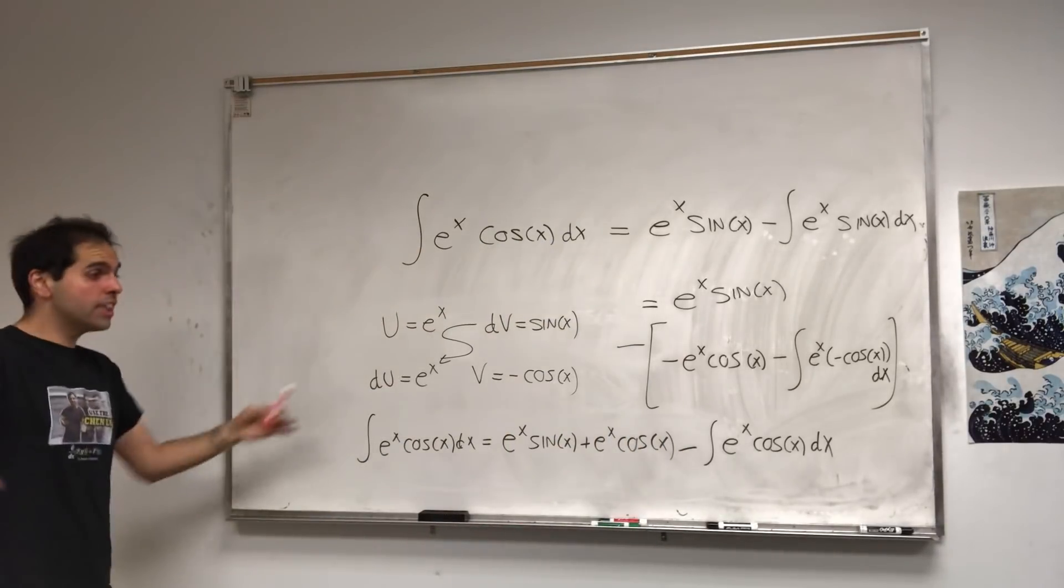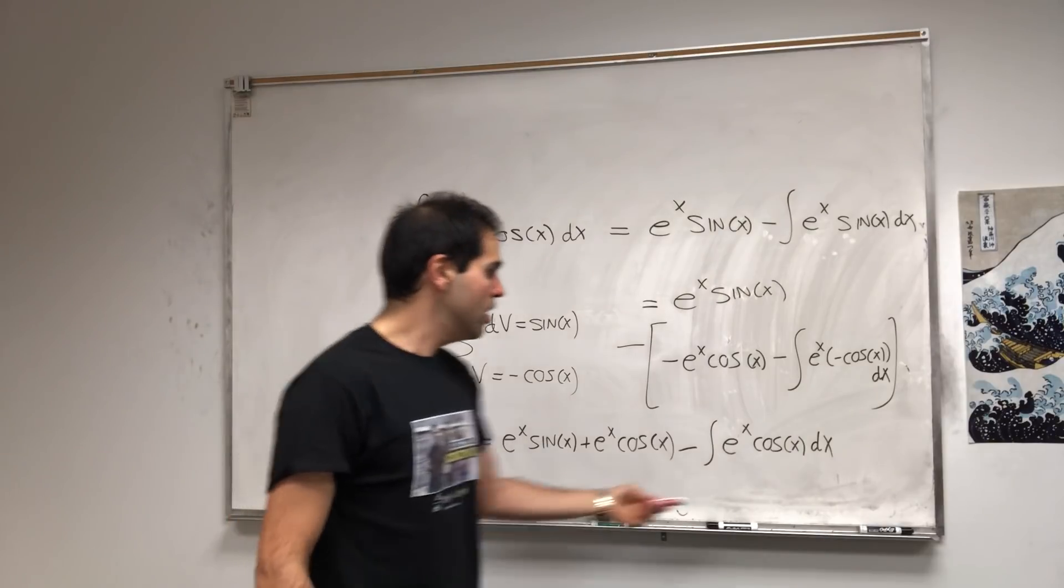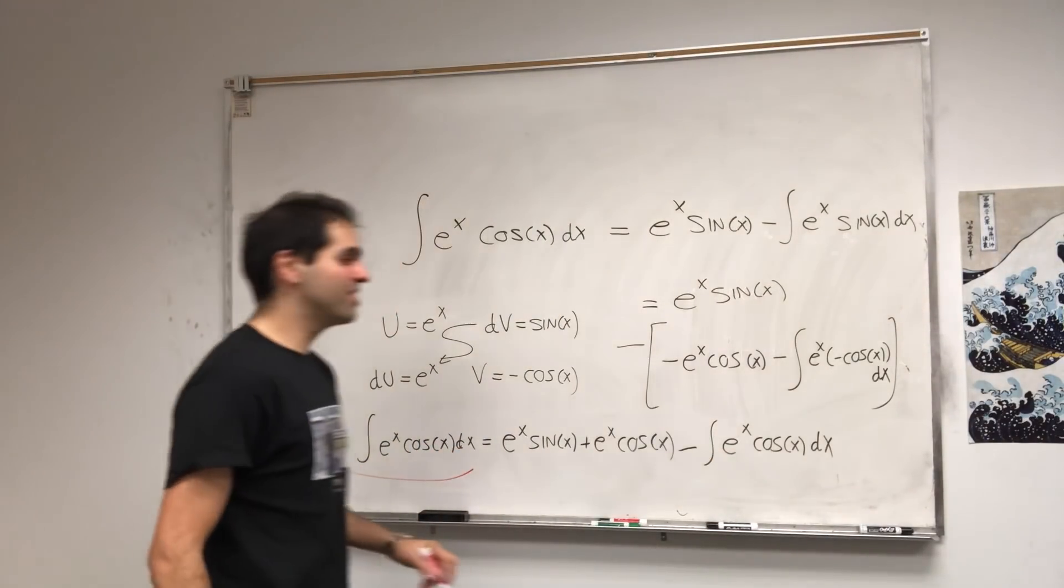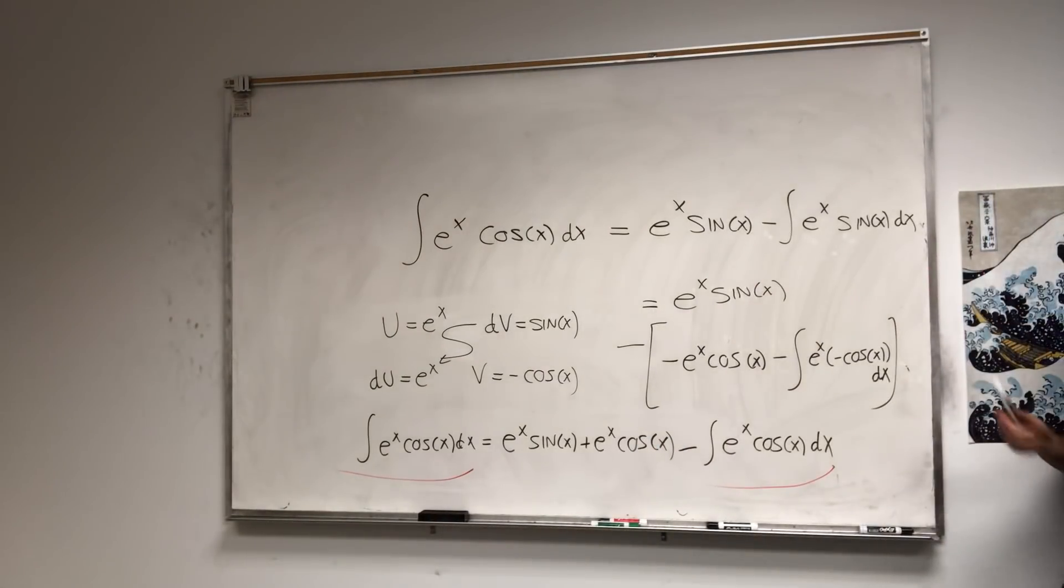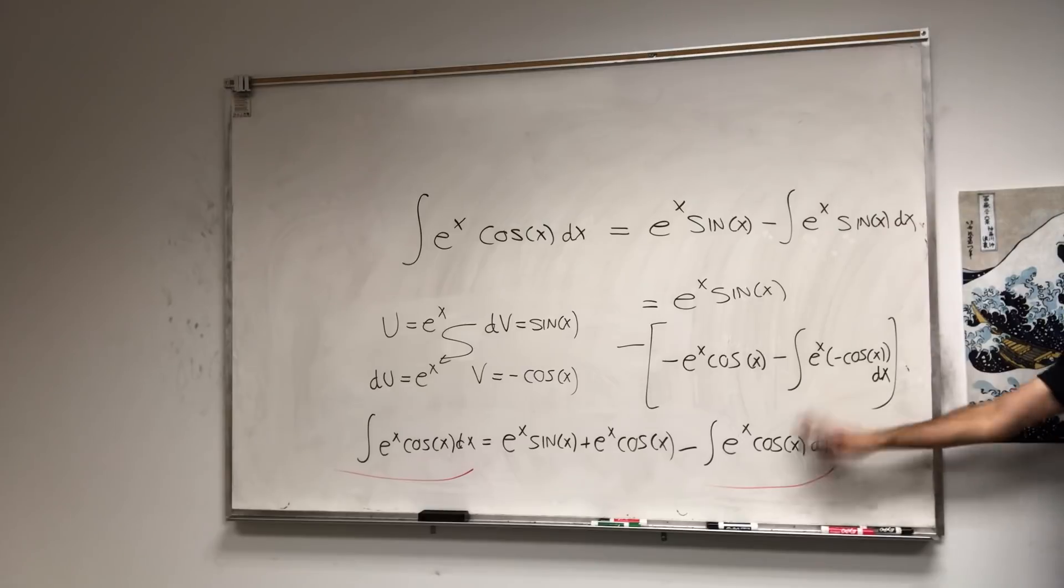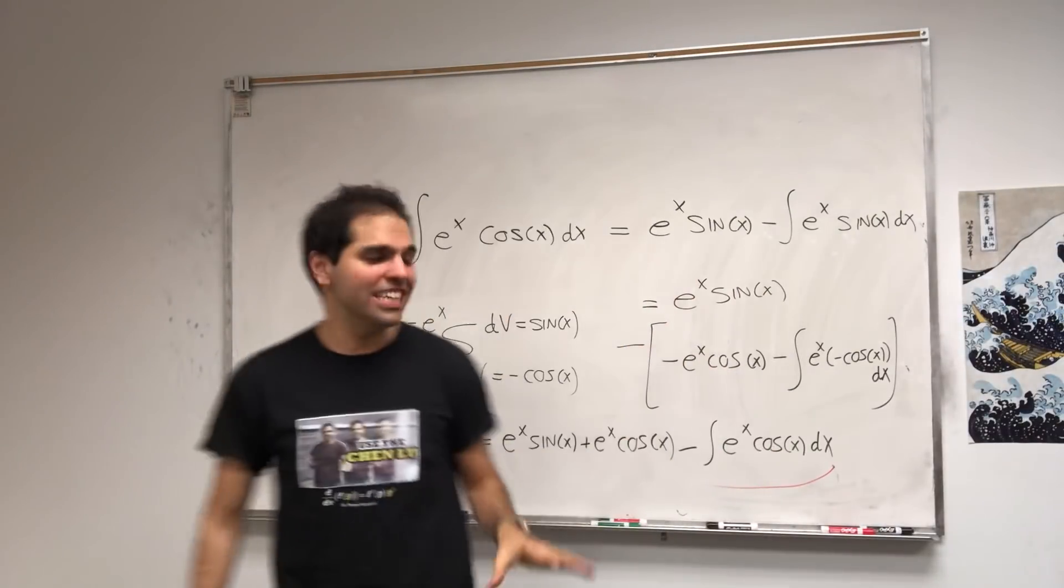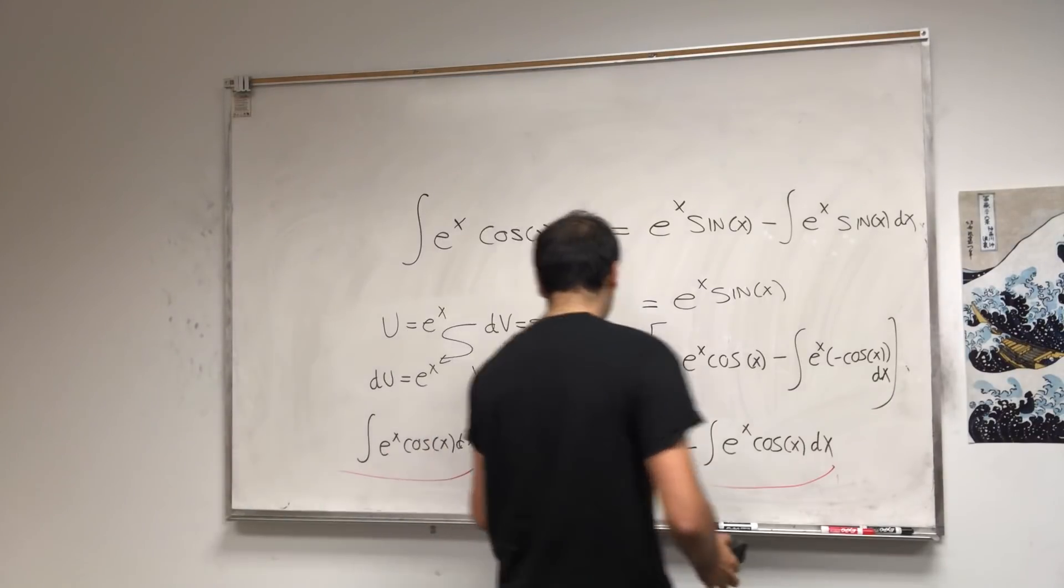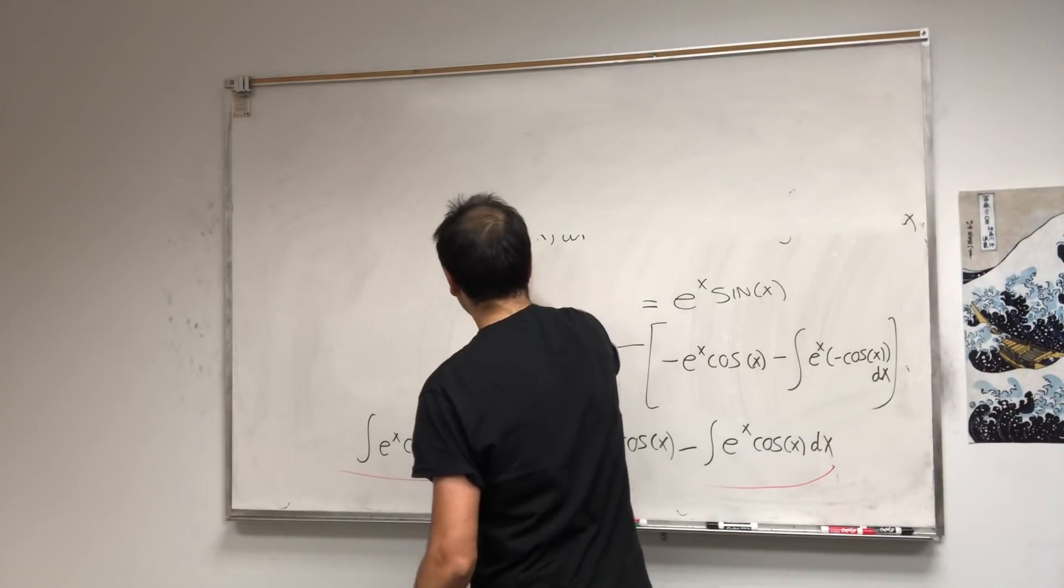And you're like, oh my god, this is a problem, because we started with an integral, we turned off with the same integral. But here's a cool, cool thing. So cool. Namely, we can now solve for unknown. You treat the integral as an unknown and you solve for it. So this equals to junk minus this.